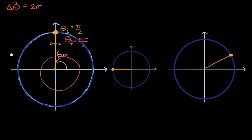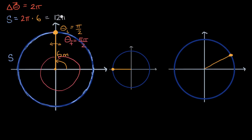We'll denote the distance by s, which we can also view as arc length — here the arc is the entire circle. That's going to be the circumference of the circle, which equals two pi times the radius. So it's two pi times six meters, which is 12 pi meters — that is the distance traveled.